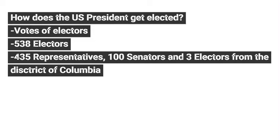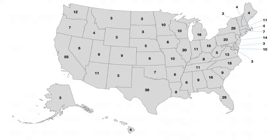Now let's talk about how the US president gets elected. He needs to win votes of electors. There are 538 electors in total — 435 representatives, 100 senators, and 3 electors from the District of Columbia. Each state has a certain number of electors depending on their population. As an example, California has 55 votes, the most out of the whole USA, and in second place is Texas with 38.